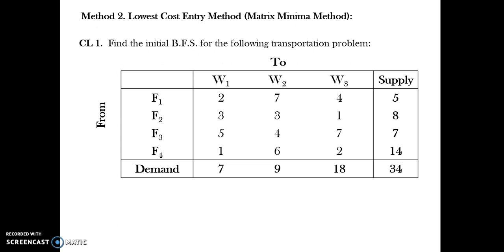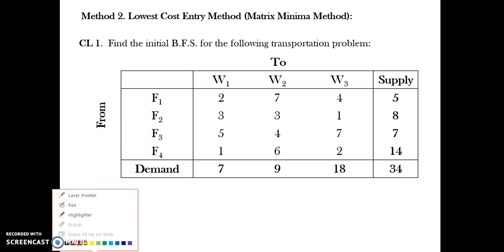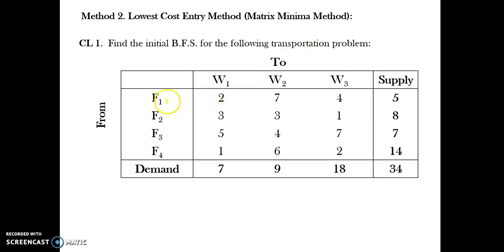I have a very simple transportation problem in front of me. There are 4 factories or 4 plants from which I am supplying to 3 different warehouses. In total, 34 is the demand and supply match. This is a cost matrix.